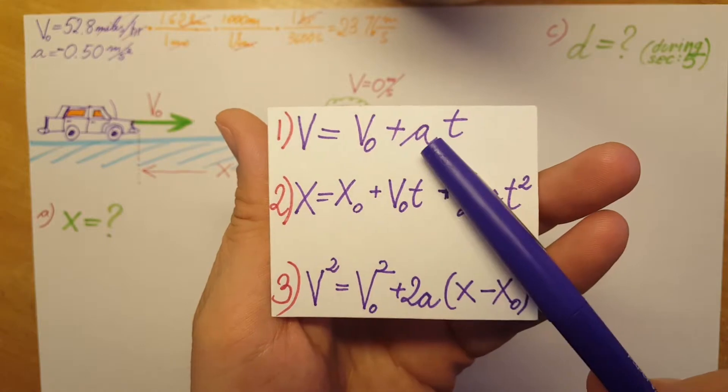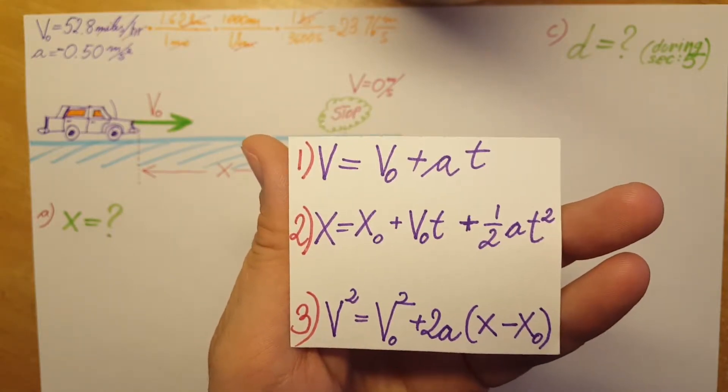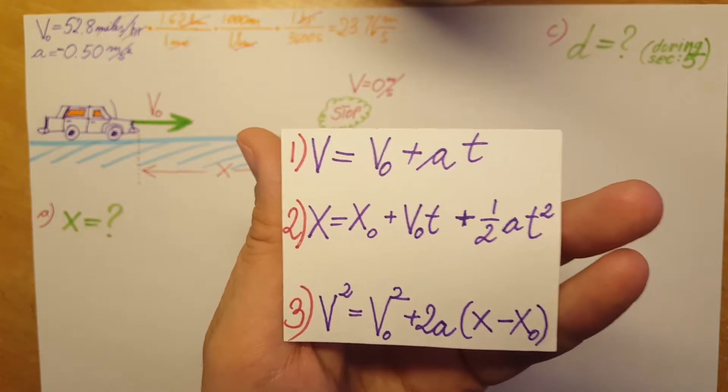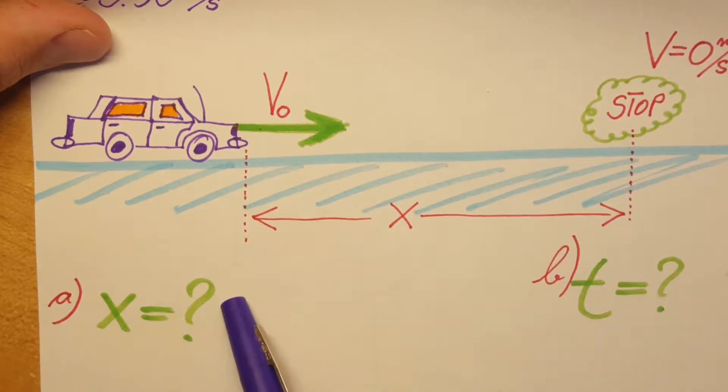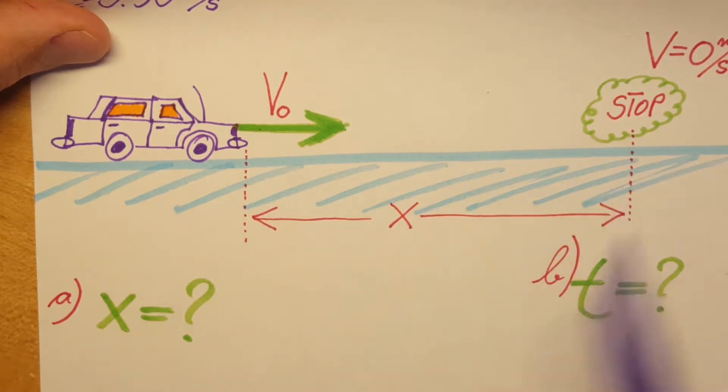In this problem, we're gonna use all three of them. In the first part, we're gonna start by using number three. They're asking us to find the distance that the car will coast till it comes to a stop.